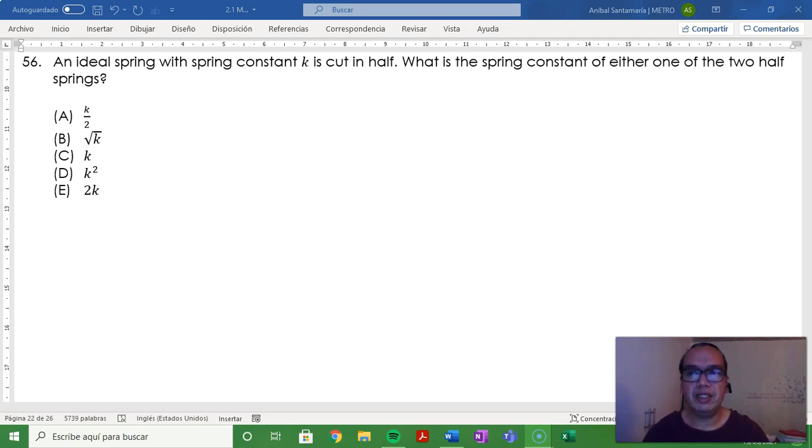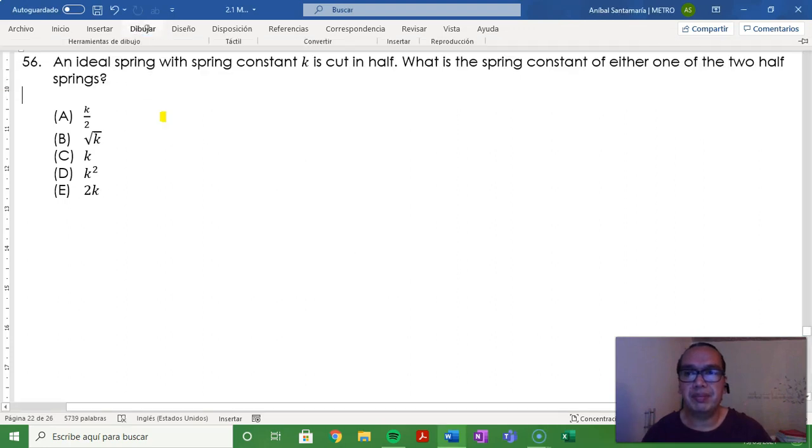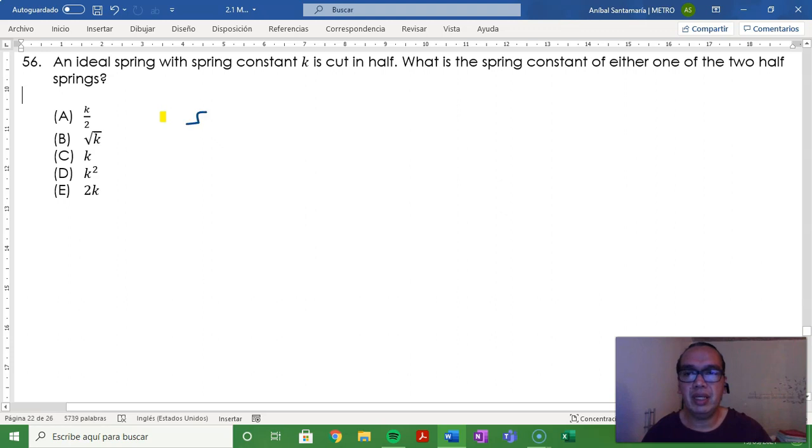An ideal spring with spring constant k is cut in half. What is the spring constant of either one of the two half springs? Now in order to answer this situation, we must remember that a spring has a spring constant defined